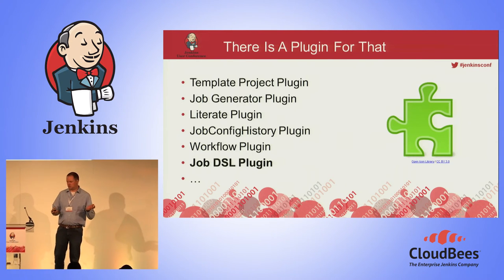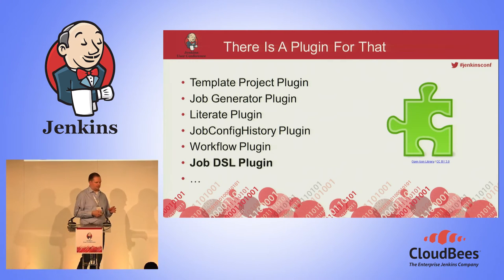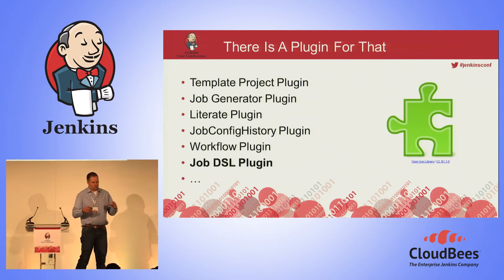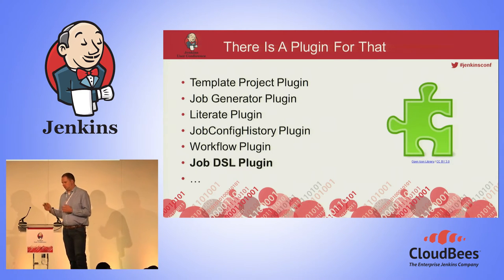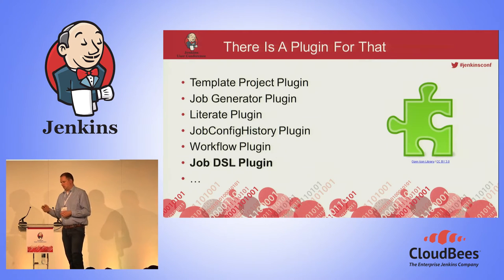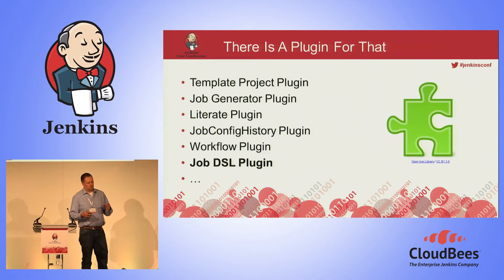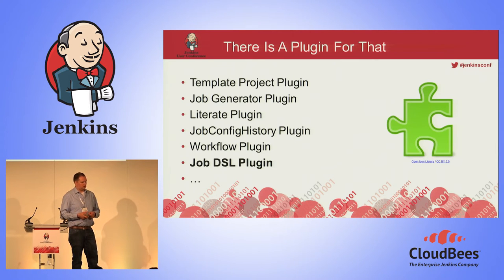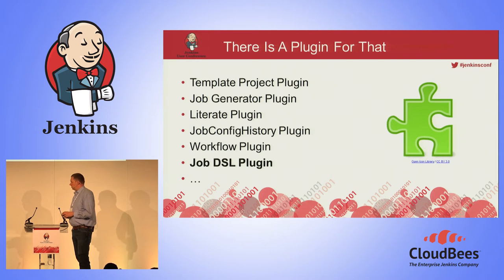So in the Jenkins world, as always, there's a plugin for that. There are several plugins which solve aspects of the configuration-as-code problem. There's the Job Config History plugin where you can see what changes have been made in the past. There's the Workflow plugin which allows you to set up complex pipelines. There are also the Template Project plugin and the Job Generator plugin which allow generating jobs from templates. And of course there's the Job DSL plugin which tries to solve all of these things.